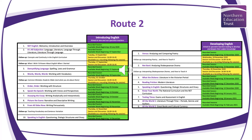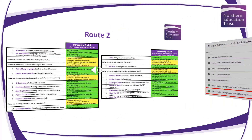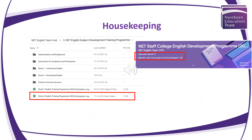We'll ensure that we're in email contact with everyone who's signed up, so that all are kept fully informed. Please do make sure that you list your name, academy, and email address in the Excel document provided on the NET English Team Hub, so that we can ensure you receive all relevant communications.